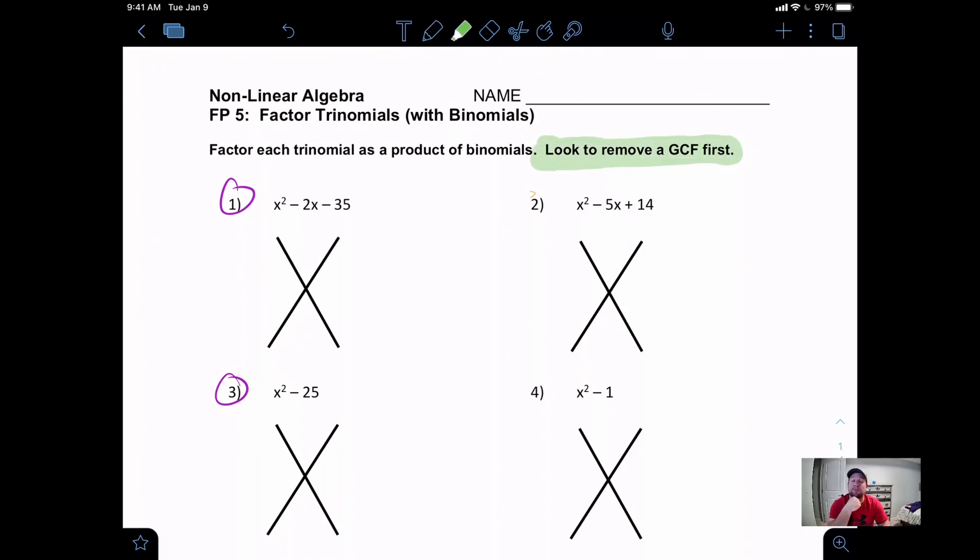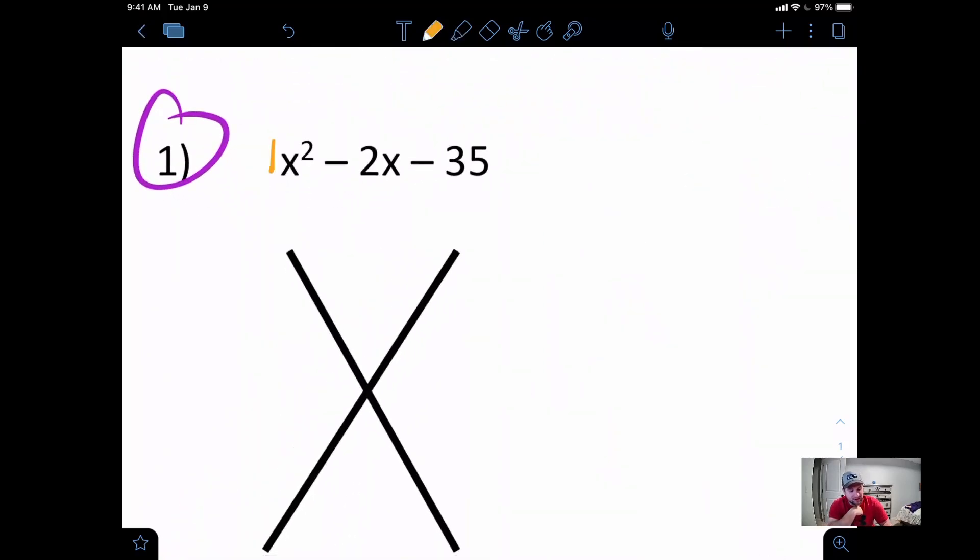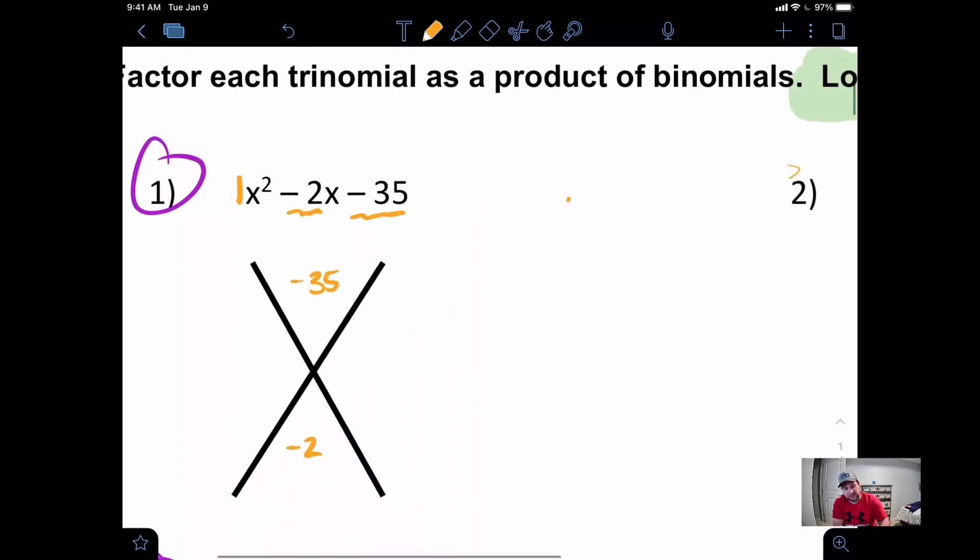So looking at this problem, problem number one, in problem number one since our a term is one, there's going to be no greatest common factor to pull out. When this is the case, we just come over here and we can get to work. So we want to take whatever this number is, we put it up top. Whatever this number is, we put it on the bottom. On the sides we always put 1a. So remember our general factored form for this, or how we use the x, is ac. A times C goes up top. B goes on the bottom. And this is ax and ax over and over.